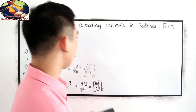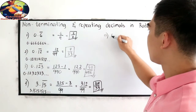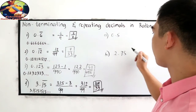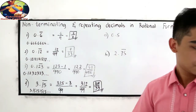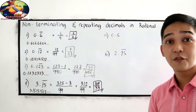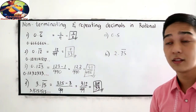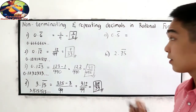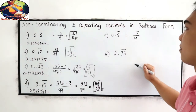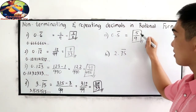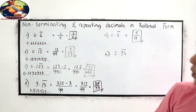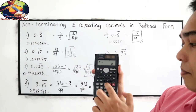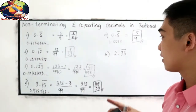Now I want you to answer the following: Letter A — 0.5 bar; Letter B — 2.75 bar. If you want to answer, pause then resume watching when you're done. Let's check: 0.5 bar is simply 5 over 9, in simplest form. We know this is 0.5555. Let us check: 5 divided by 9 gives 0.555. Correct.